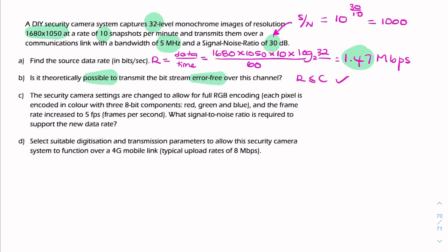So it is possible. Now we've upgraded the system or we've improved the quality in two ways. So we're now sending RGB data, so 3 times 8 bit, we're sending 24 bit data, and we're sending 5 frames every second. So instead of sending 10 frames per minute, that's 1 every 6 seconds, we're sending 5 frames every second. And the question is what is the signal to noise ratio to support that?